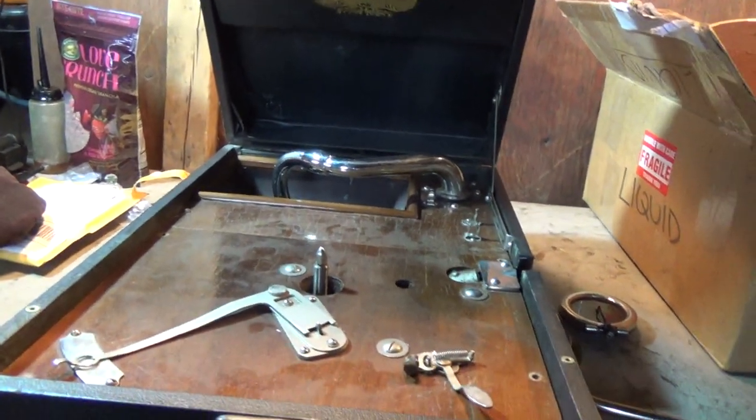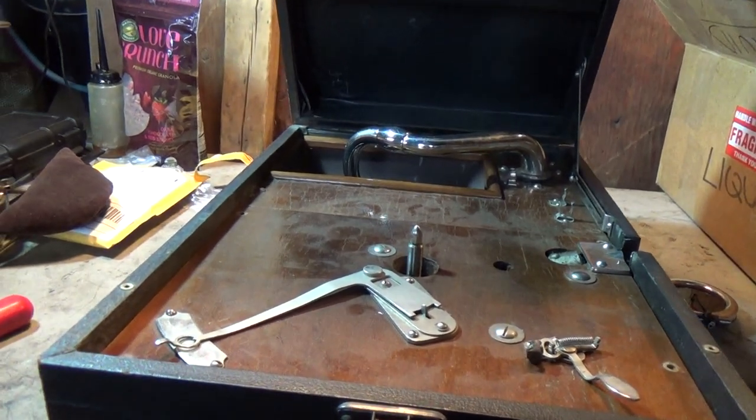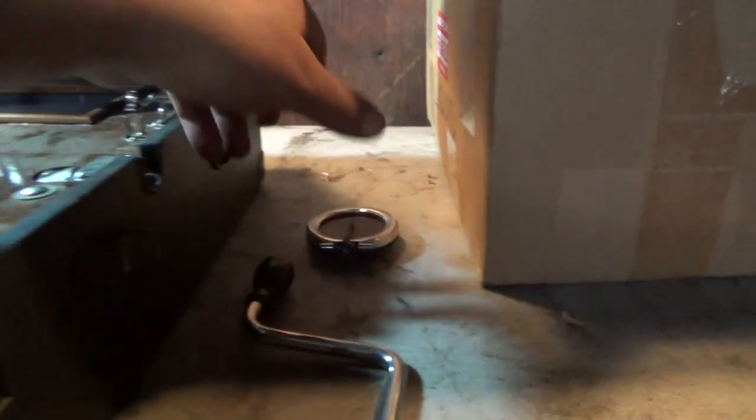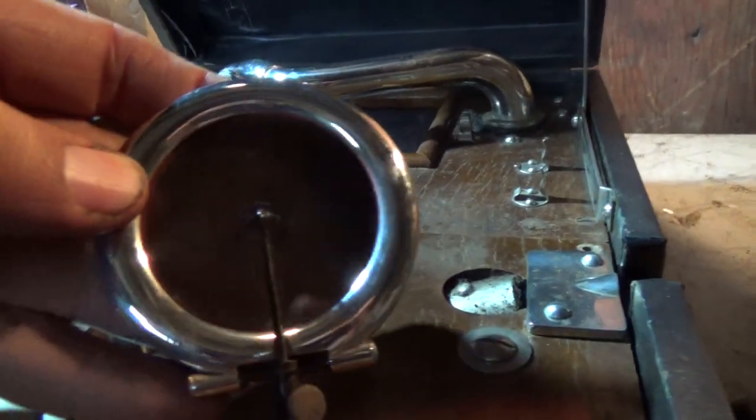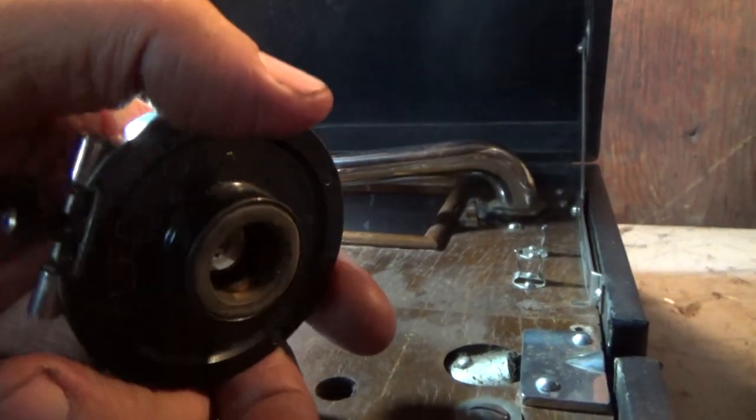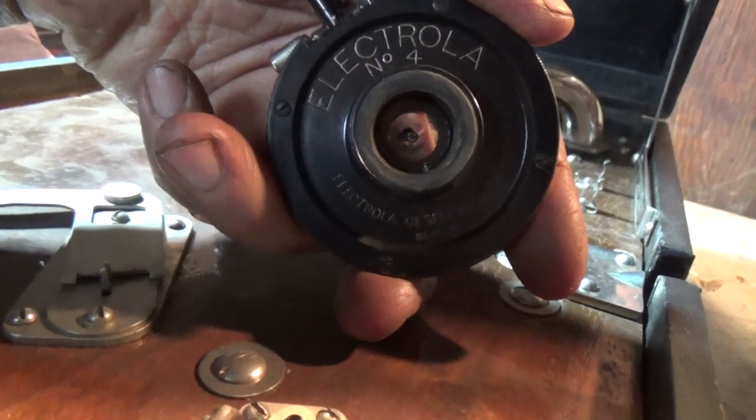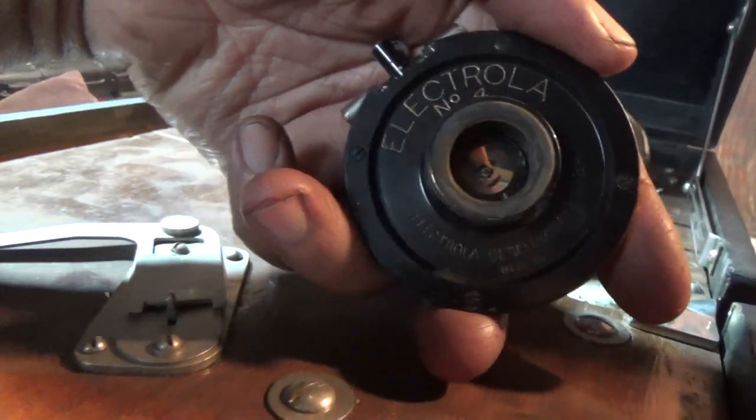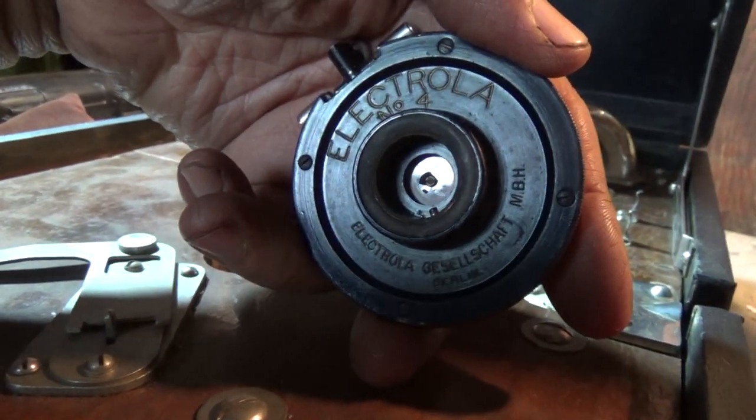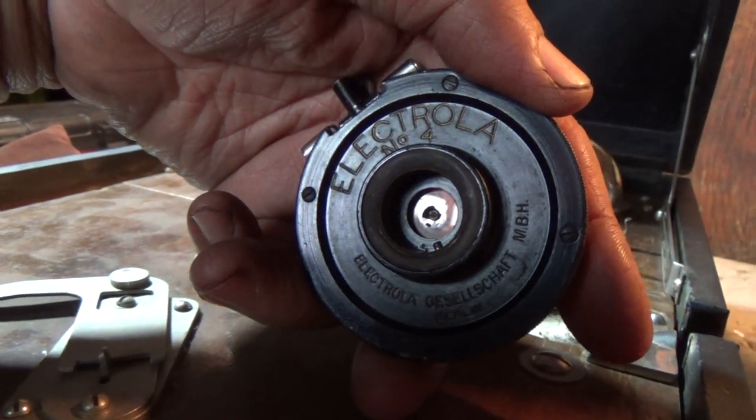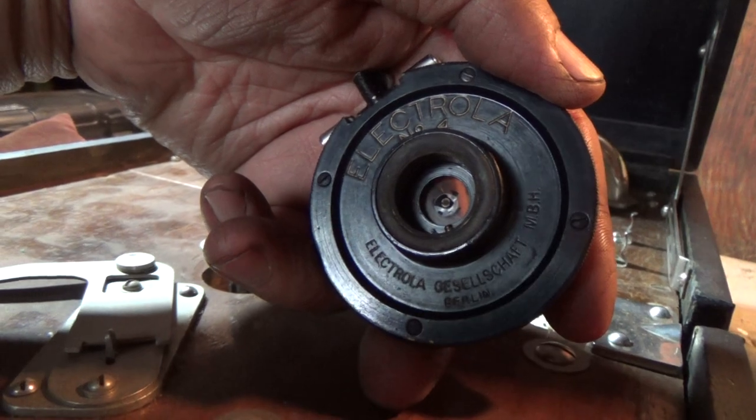Now, what this machine had as an earlier 101 that I suspected it might have, but I've never actually seen on any of mine, is this. This is an all-brass, number four, Electrola Reproducer. Now, I've seen dozens of crumbling, cracked, and one good, or usable, number four Electrola Mark number four Reproducer. Never saw a brass one.